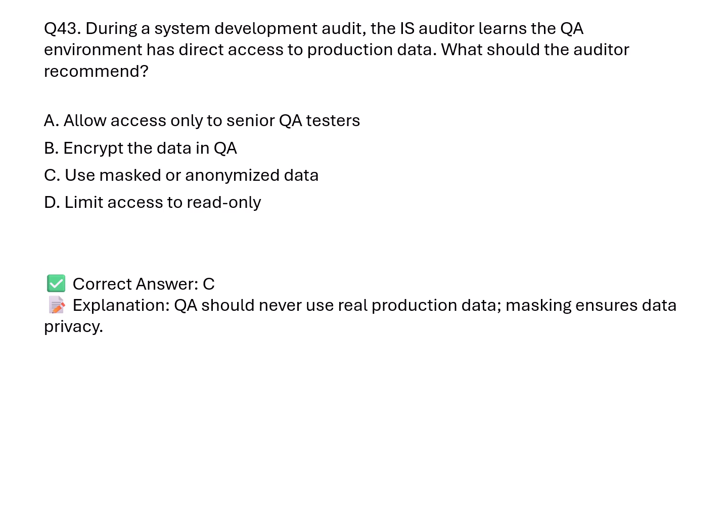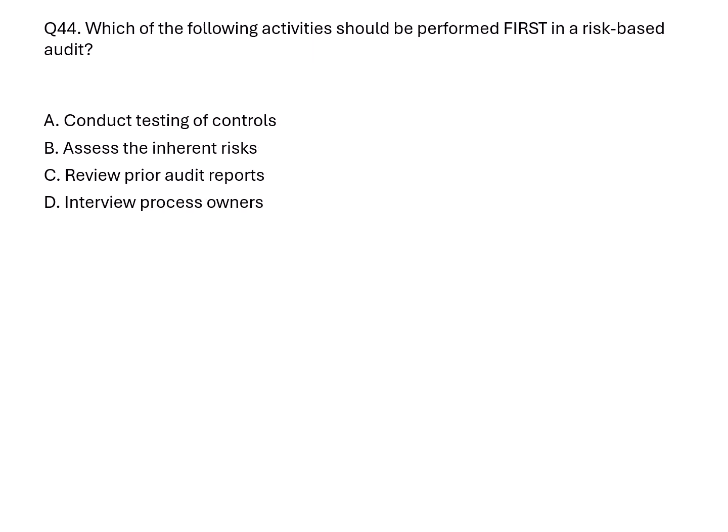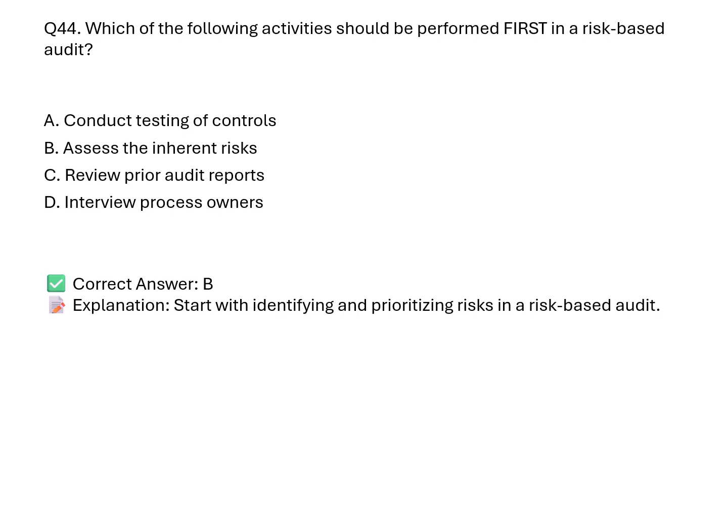Question 44. What should be done first in a risk-based audit? A. Conduct control testing. B. Assess inherent risks. C. Review past reports. D. Interview process owners. Correct answer: B. Explanation: Inherent risks form the foundation for audit focus. Assessing them first ensures resources target high-risk areas.